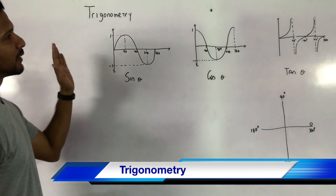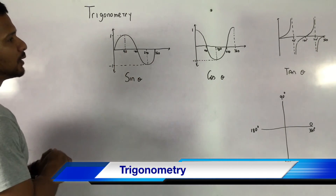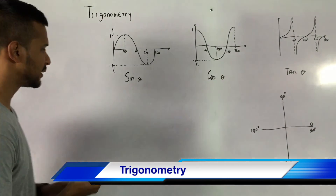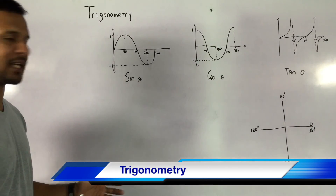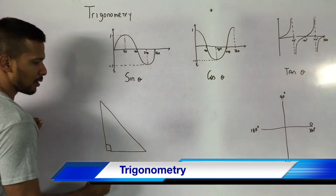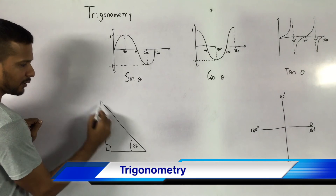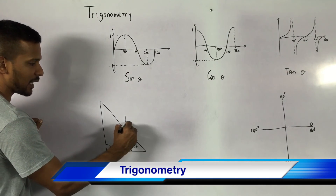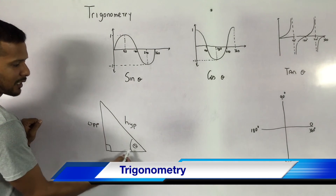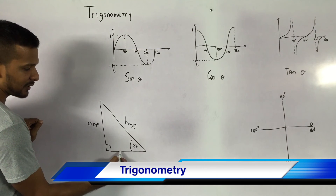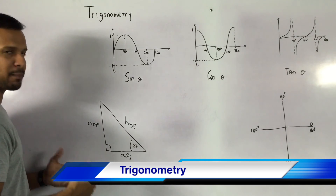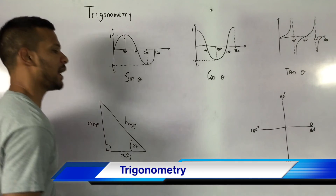Today we look at trigonometry. In trigonometry we should already be aware of sine, cosine, and tan. Just in case, let's see where sine, cosine, and tan came from. We all know what a right angle triangle is. Looking at angle theta, the longest side opposite to the 90 degrees is the hypotenuse. The side opposite theta is called the opposite, and the side making the angle theta is called the adjacent.